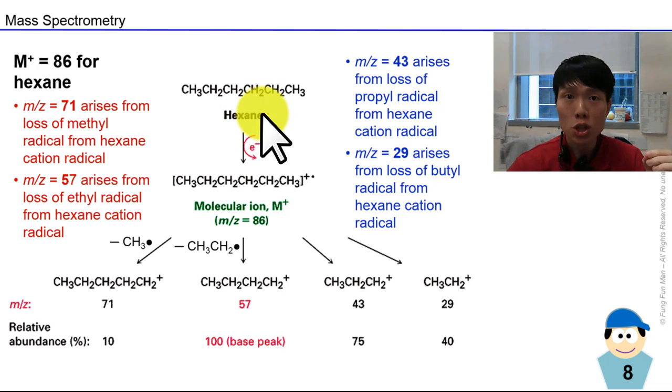Now hexane, once we change it to a cation here, still 86, we are not losing any atom, no fragmentation yet, just losing one electron to become positively charged. Highly energized. So there's several ways we can cut this molecular ion. If we cut here, we cut the methyl group away. Methyl group is worth 15. So we minus 15, we get 71. We lost a methyl radical and generate this ion.